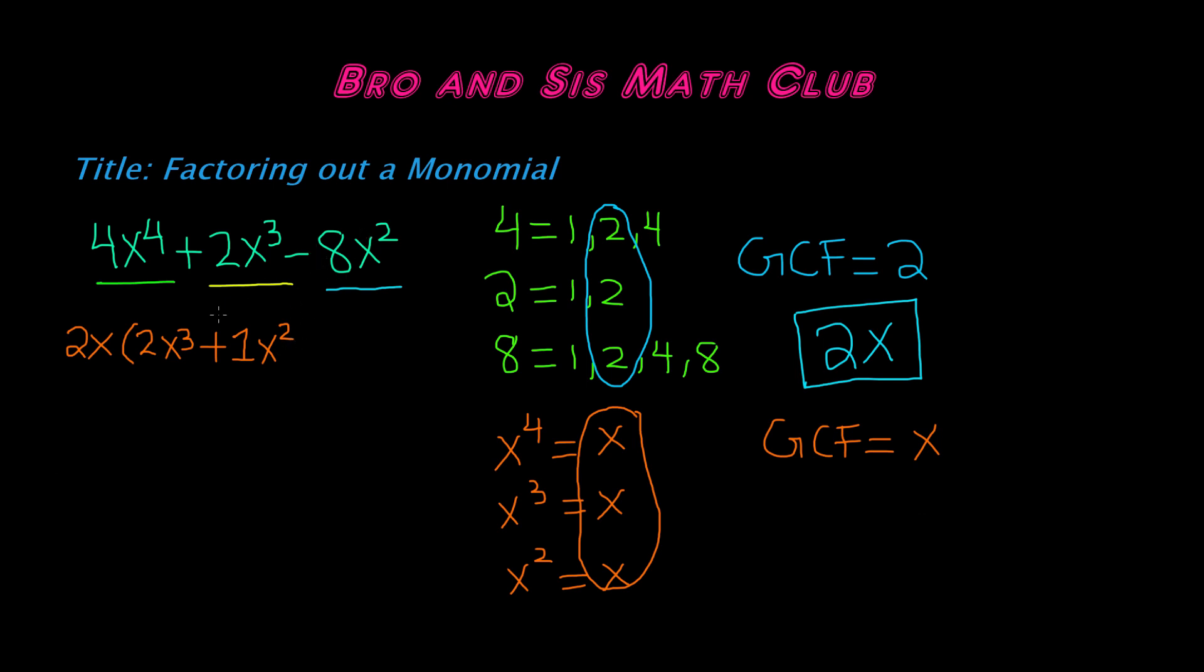And then you have negative 8x squared divided by 2x. Negative 8 divided by positive 2 is going to give you negative 4. x squared divided by x is going to give you x. Because x to the power of 2 and x to the power of 1, if you subtract it, you get x to the power of 1 or simply x.